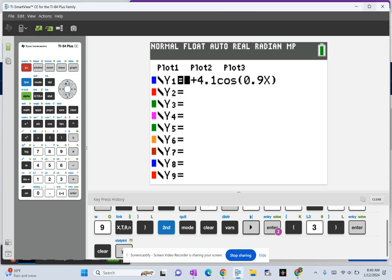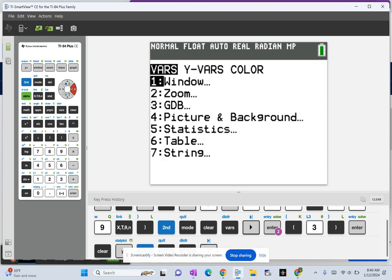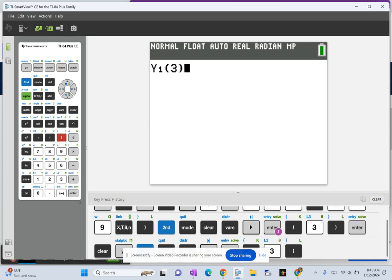So you're going to go ahead and type that velocity function into Y1 like I've done here. And then I'm going to go second mode to get to the main screen.